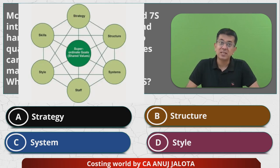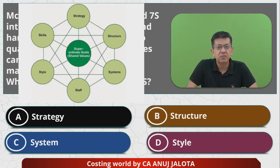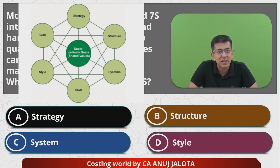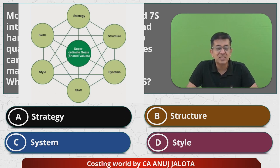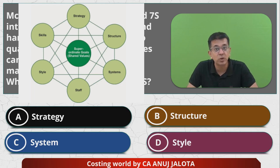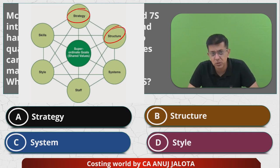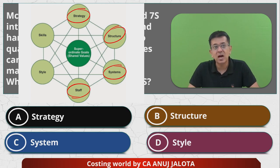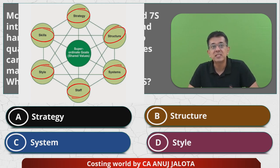What is McKinsey 7S framework? McKinsey 7S is a framework whereby there are seven things that influence the entire business — it identifies how these seven things influence your business. These things are: Strategy, Structure, Systems, Staff, Style, Skills, and lastly, Shared Values.